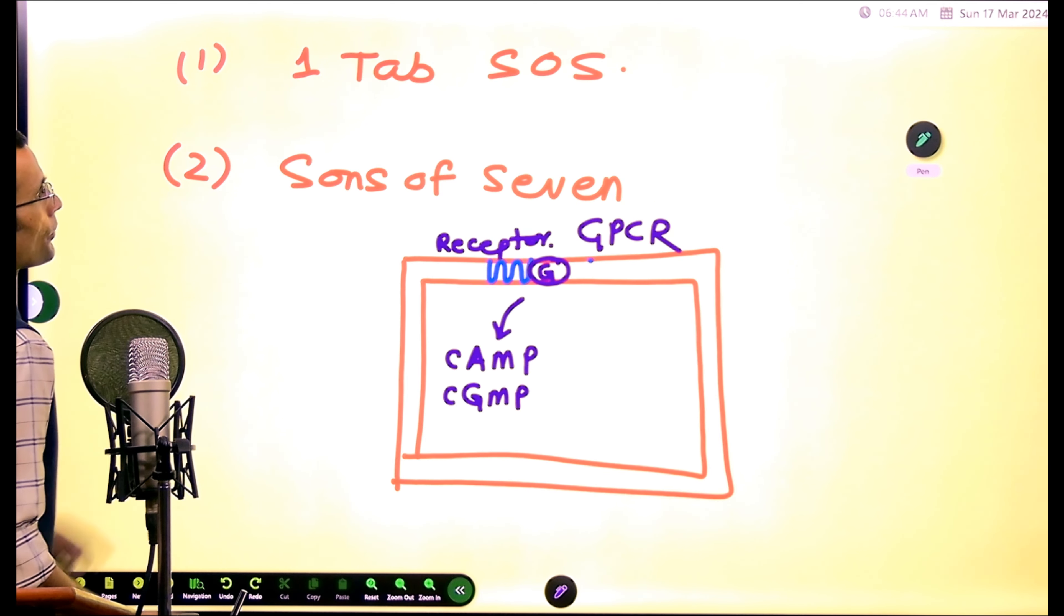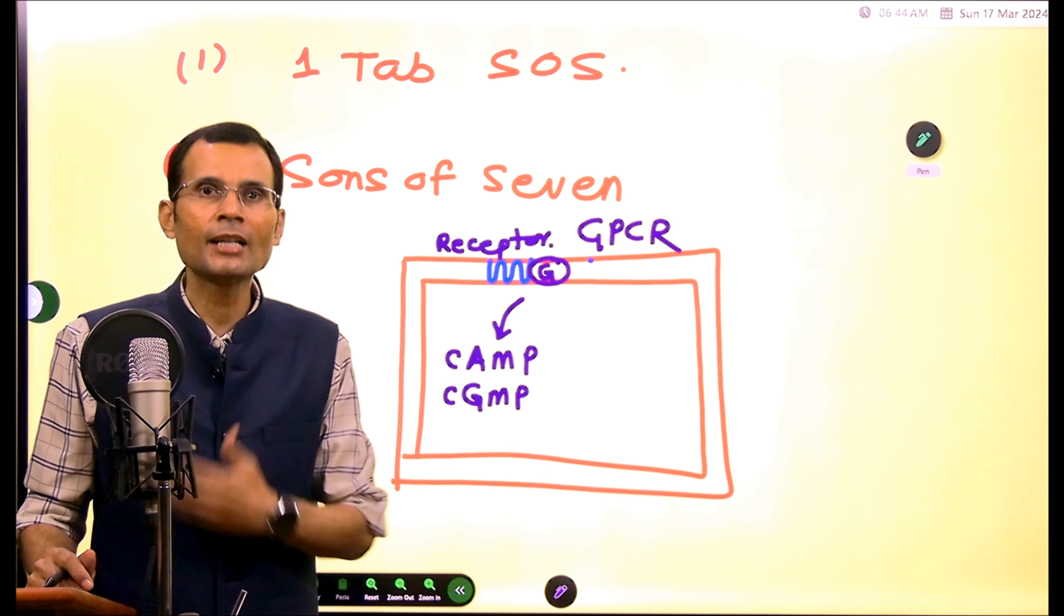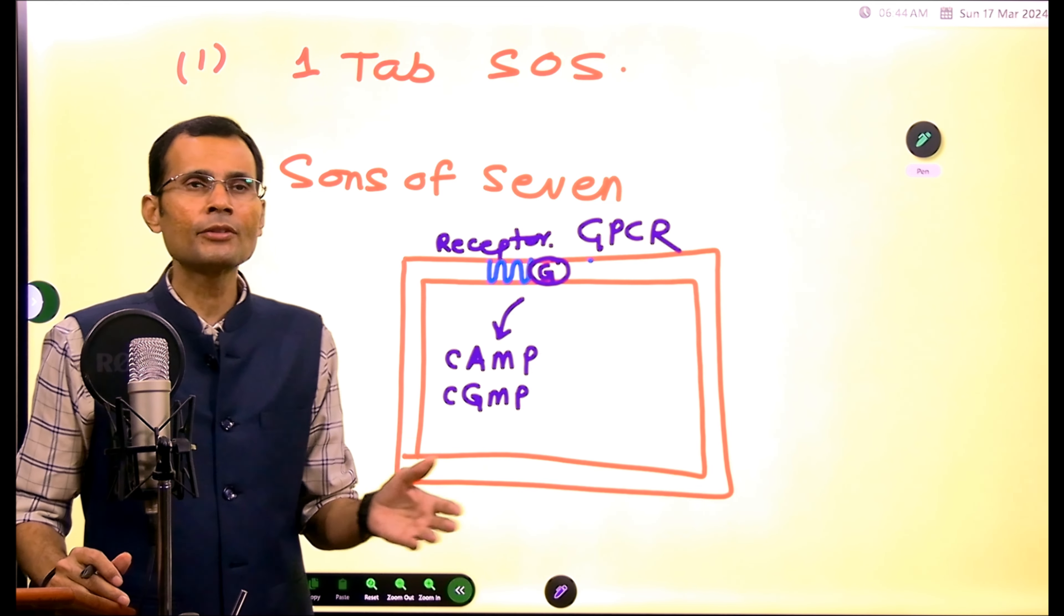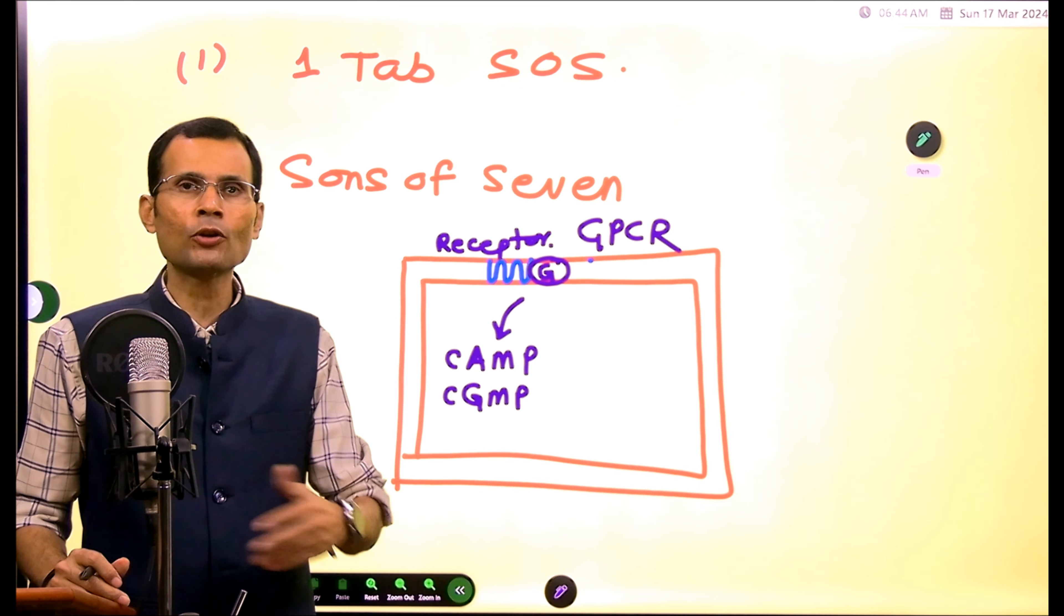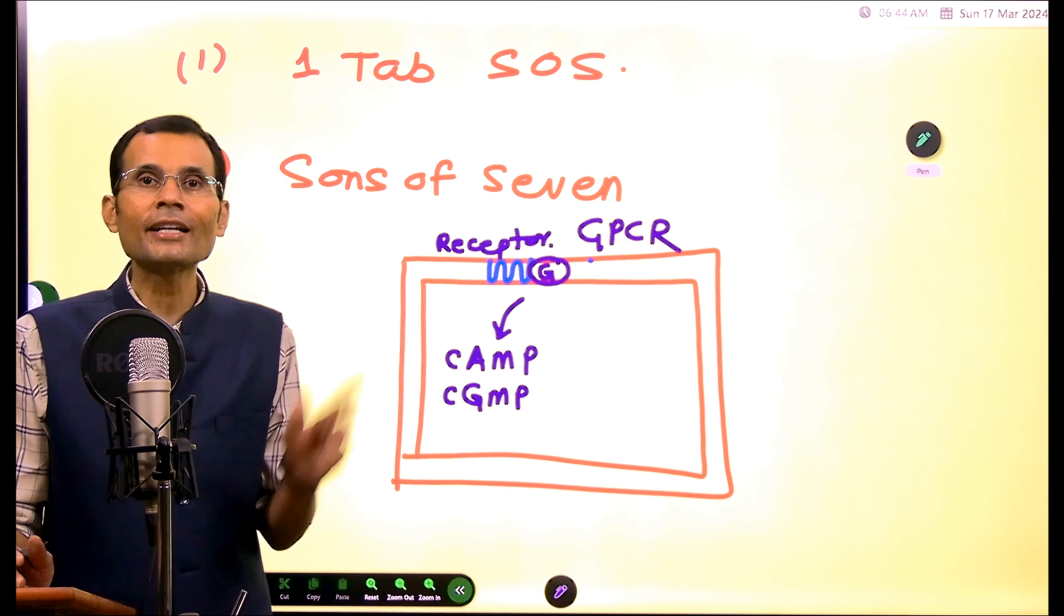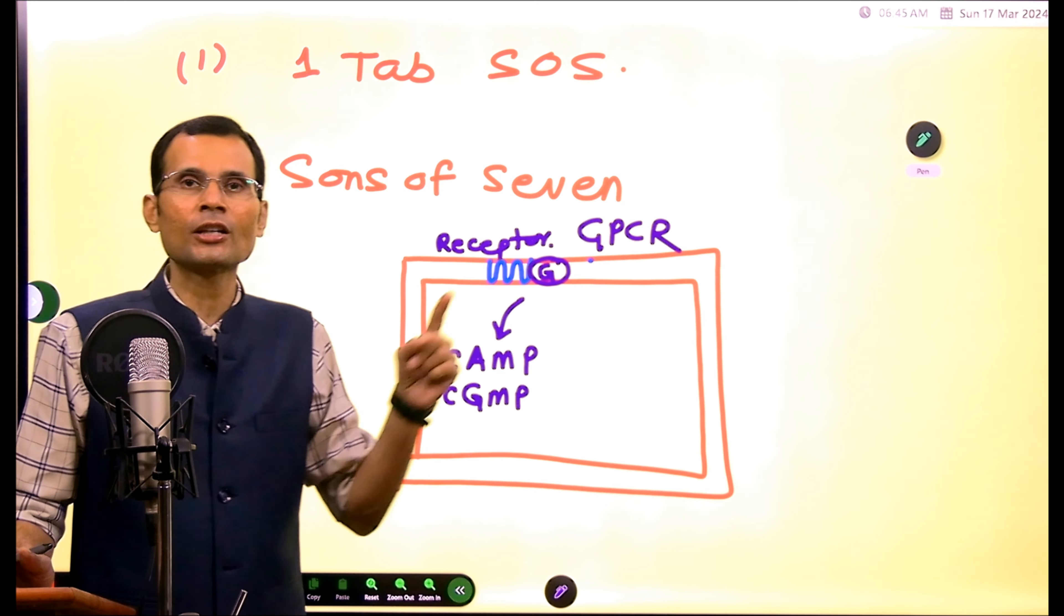So when do you write it? Generally, SOS is written on the prescription pad. When you write a medicine to the patient, you write the tablet to be taken twice a day or thrice a day or four times a day, or you write it as one tablet SOS. That SOS means as and when required.